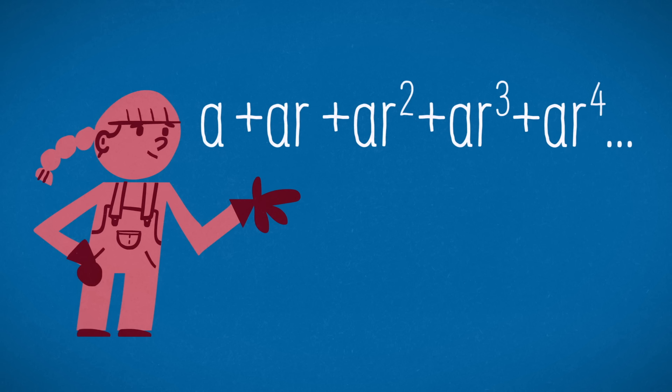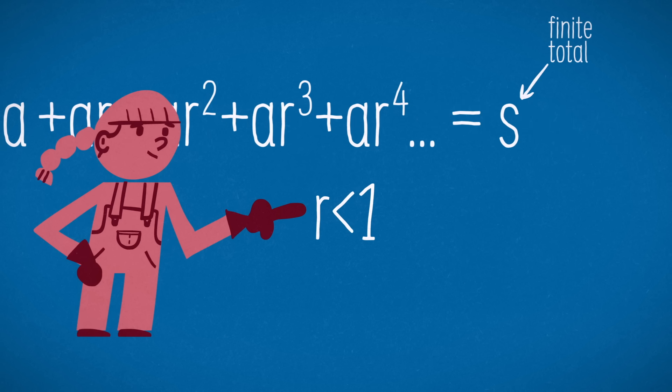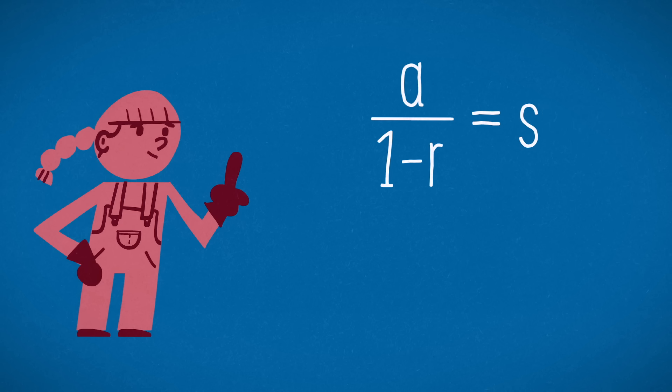First, if the common ratio R of a geometric series has absolute value less than 1, the series has a finite total. And second, if the first number in the series is A, that total is A divided by 1 minus R.